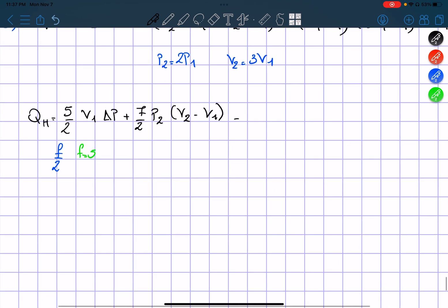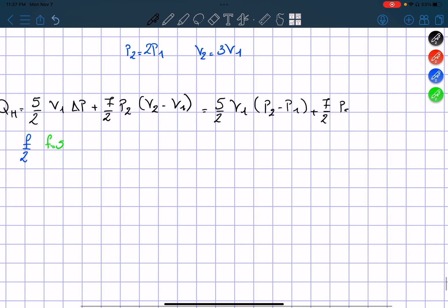We can solve this. And we get 5 over 2 times V1 times delta P which is equal to P2 minus P1 plus 7 halves P2 times...